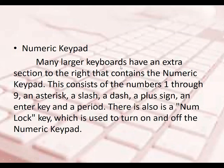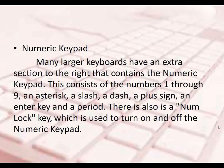Next is the numeric keypad. Many larger standard keyboards have an extra section on the right that contains the numeric keypad. This consists of numbers 0 through 9, an asterisk, a slash, a dash, a plus sign, an enter key, and a period. There is also a Num Lock key used to turn on and off the numeric keypad. It functions like a calculator with number keys, plus, minus, multiply, and divide.